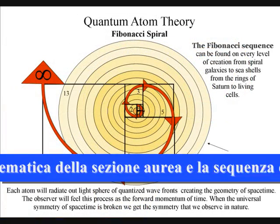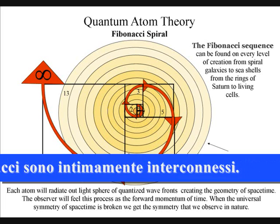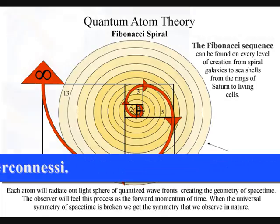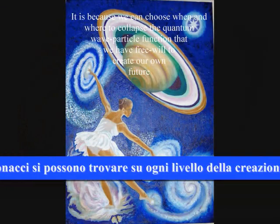The mathematics of the golden ratio and the Fibonacci sequence are intimately interconnected. The Fibonacci sequence can be found on every level of creation from spiral galaxies to seashells, from the rings of Saturn to the living cells.